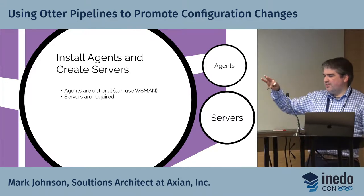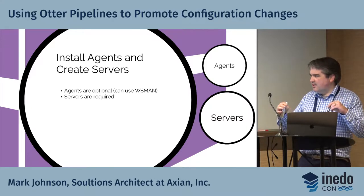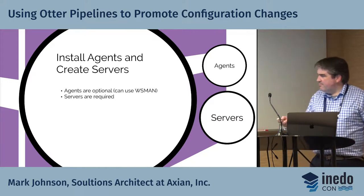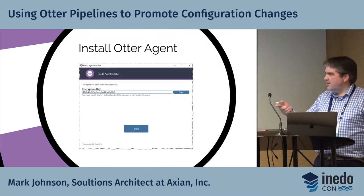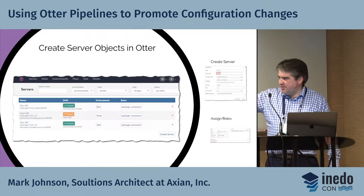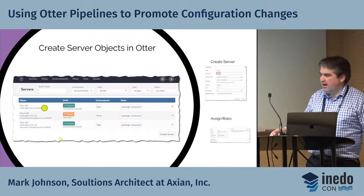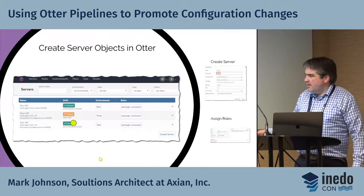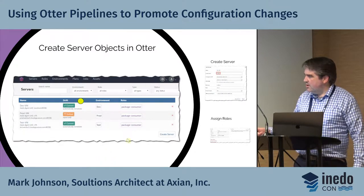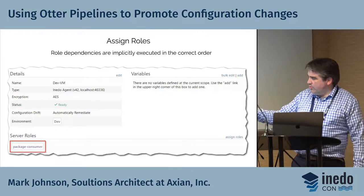Installing agents is probably familiar to anyone using BuildMaster — it's the same Inedo agent, but you could also use PowerShell remoting. The agent feels like it has a little better throughput on data rates. Installing the Otter agent is a simple ten-second operation. As we install those agents, we create the corresponding Otter server objects — representations for each environment: a dev VM, a prod VM, and a testing VM — showing their current states and assigned roles.